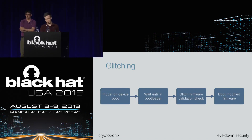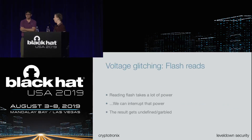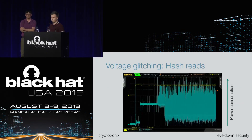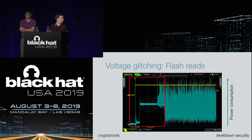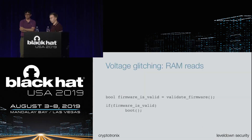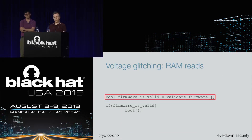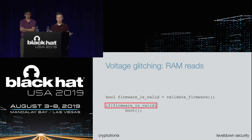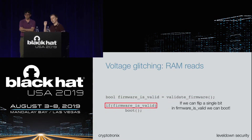Some very susceptible parts in a chip are flash reads — reading flash data takes a lot of power, and if we interrupt that power, we get back undefined or garbled data. Here we have a power trace of a chip boot-up, and we can see a huge power spike where flash loads start. If we have a bootloader with a simple boolean check — 'if firmware is valid, boot firmware' — and we insert a glitch right at that check and flip a single bit, the boolean condition evaluates to true and we can boot a compromised firmware.